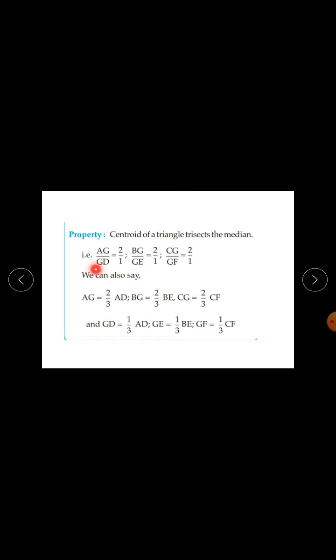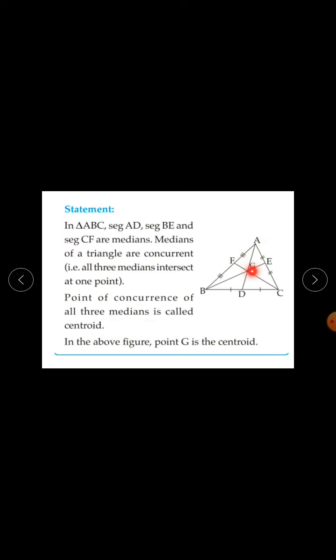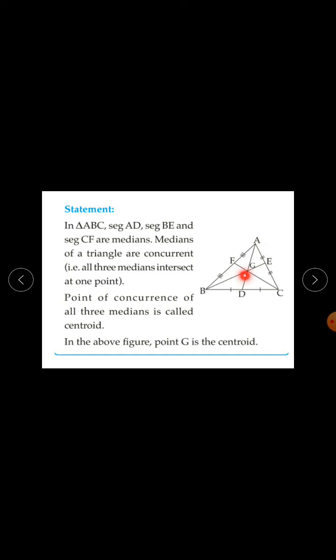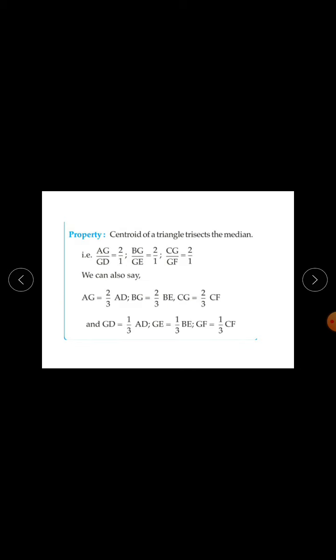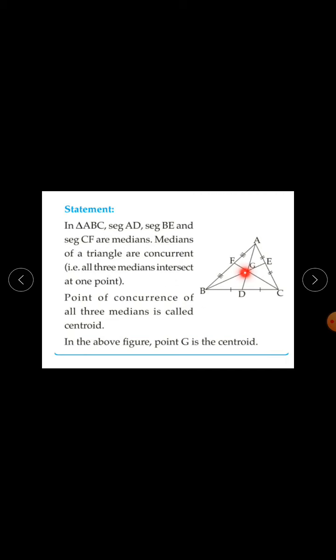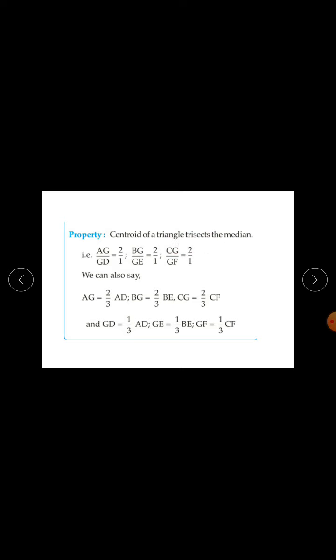There is one important property: the centroid of a triangle trisects the median. This means AG upon GD equals 2 upon 1, BG upon GE equals 2 upon 1, and CG upon GF equals 2 upon 1.